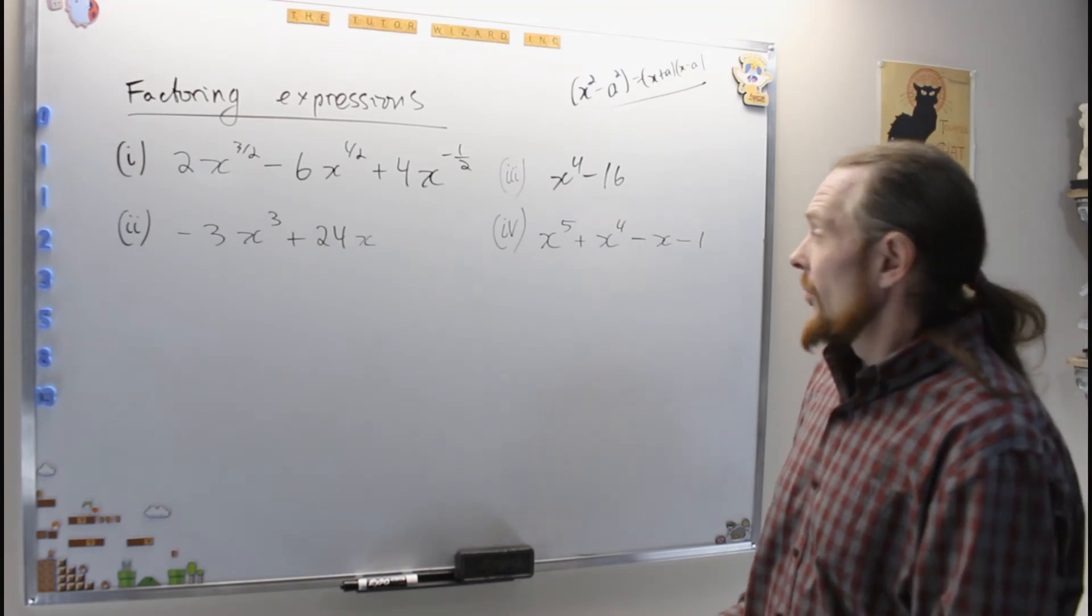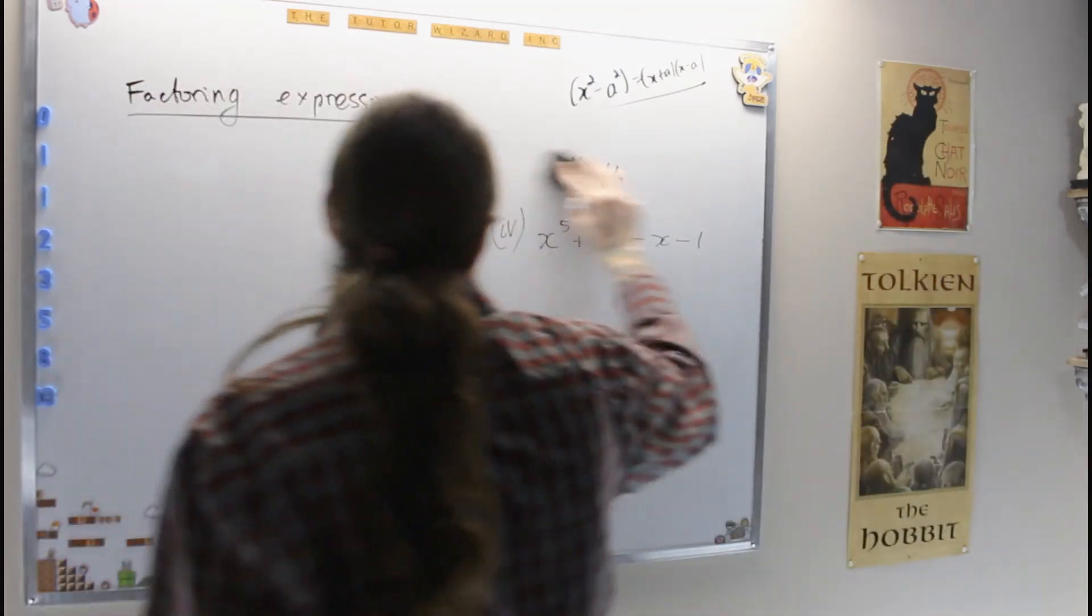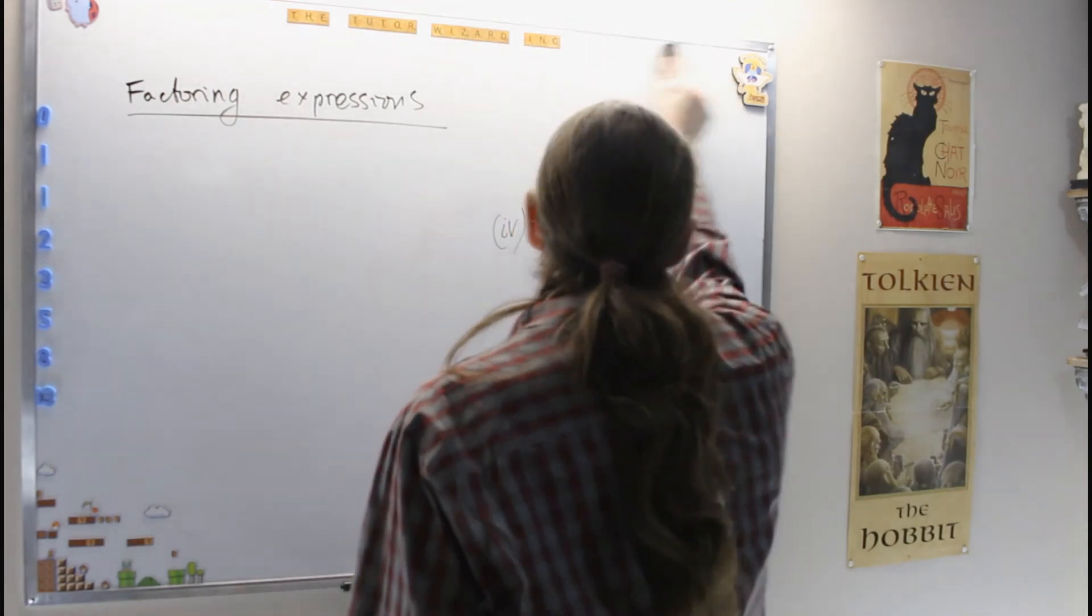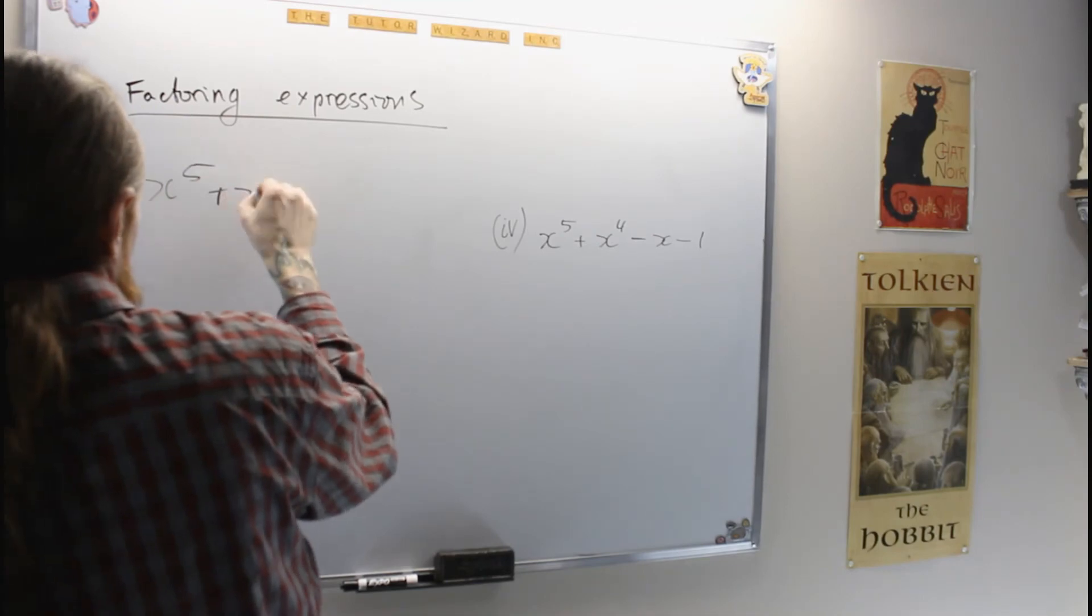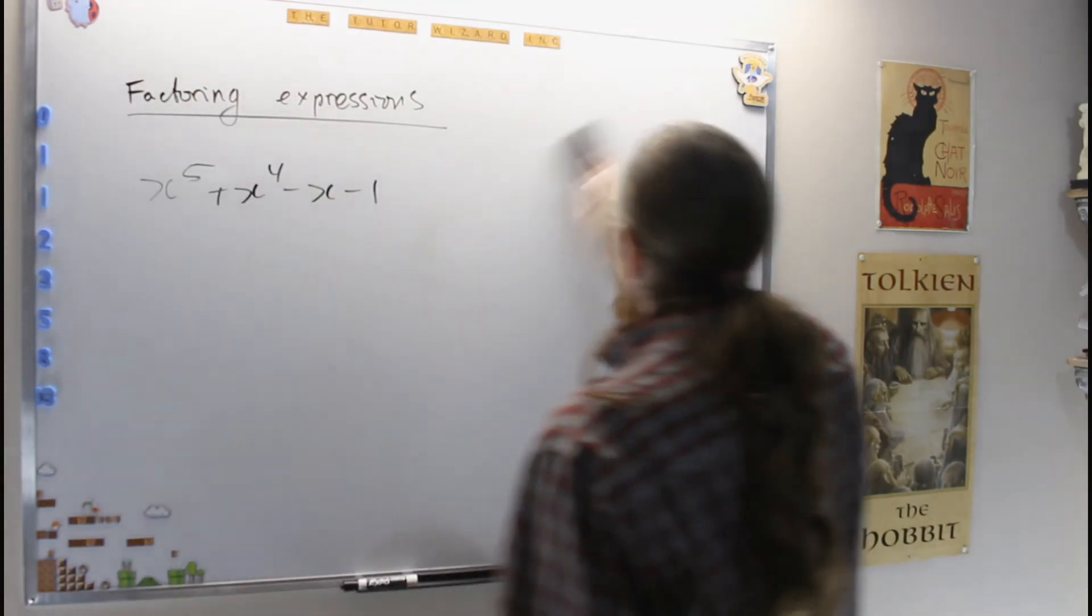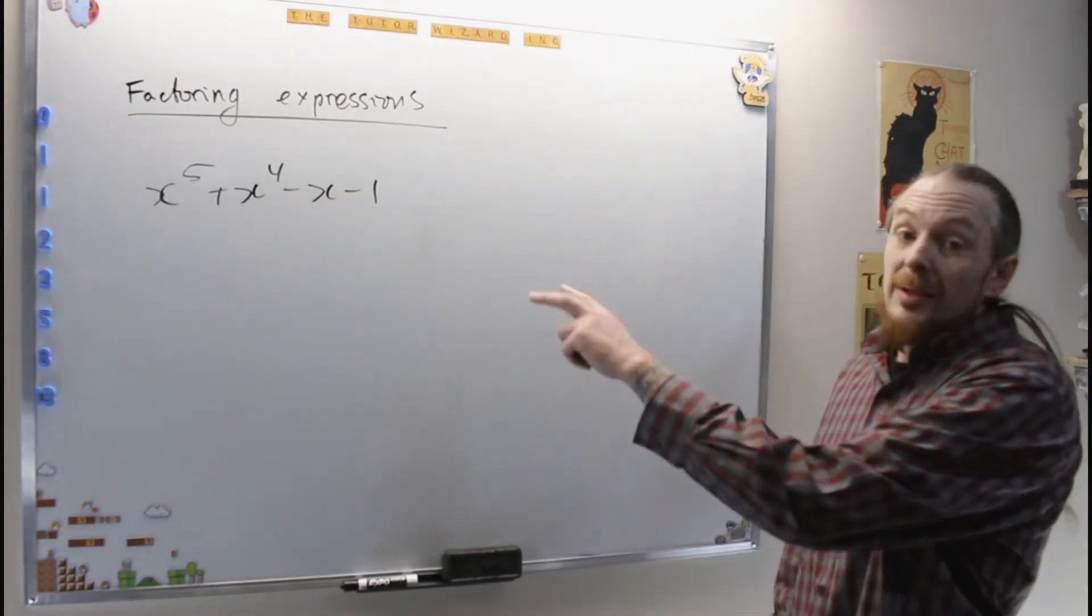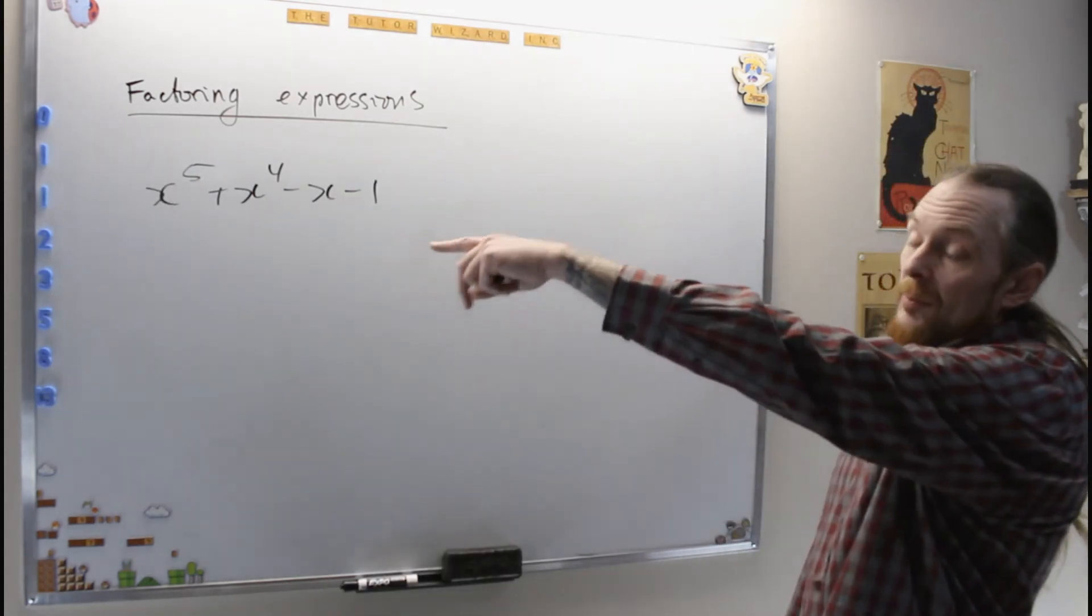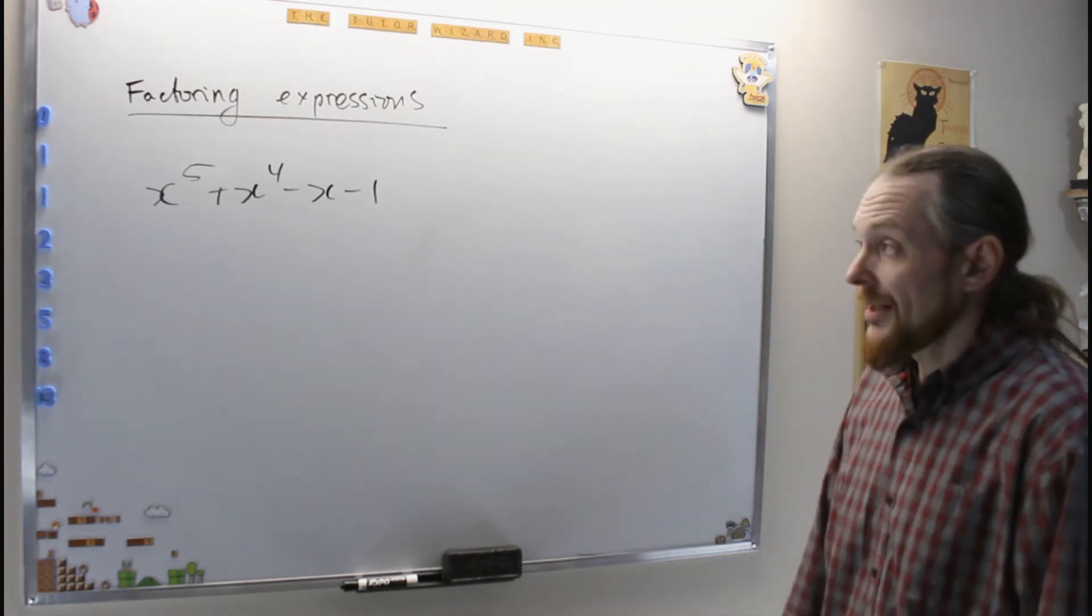2i and negative 2i. For the last one, let me rewrite that actually, since we can use the whole board now. I have x to the 5 plus x to the 4 minus x minus 1. So this is not usually going to work out like this, where a degree 5 polynomial just factors into a nice bunch of linear factors or irreducible quadratics.